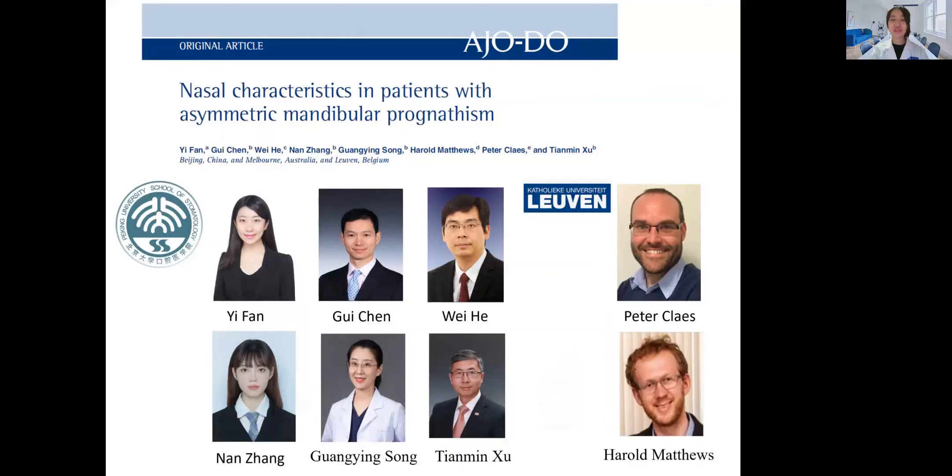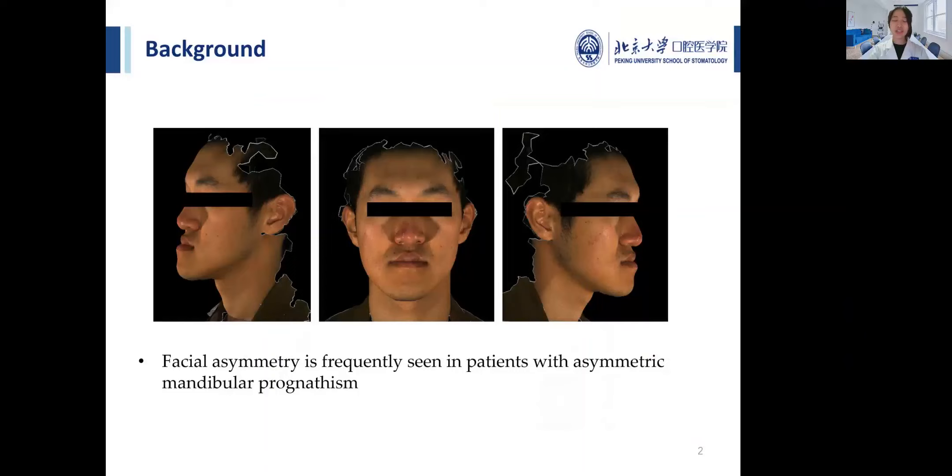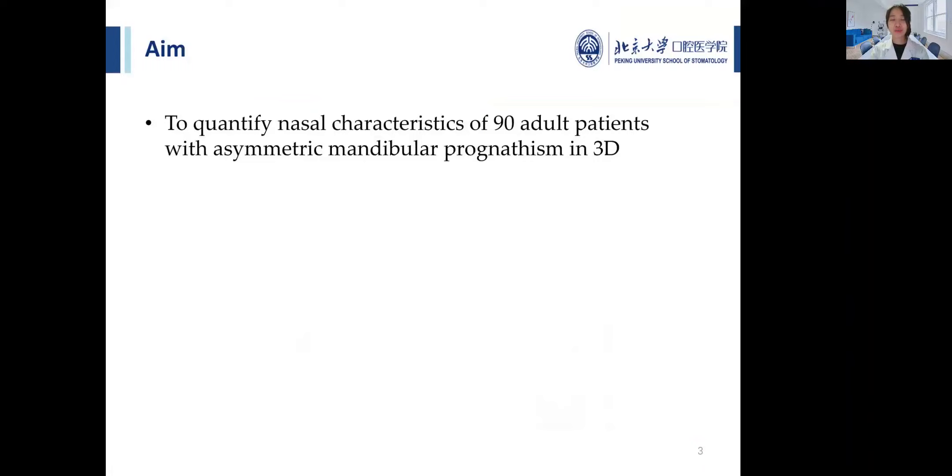Facial asymmetry is frequently seen in patients with asymmetric mandibular prognathism. These patients usually seek surgical treatment to correct the chin deviation, while deferring or not treating nasal deformities. Therefore, the aim of this study was to quantify nasal characteristics of 90 adult patients with asymmetric mandibular prognathism in 3D.